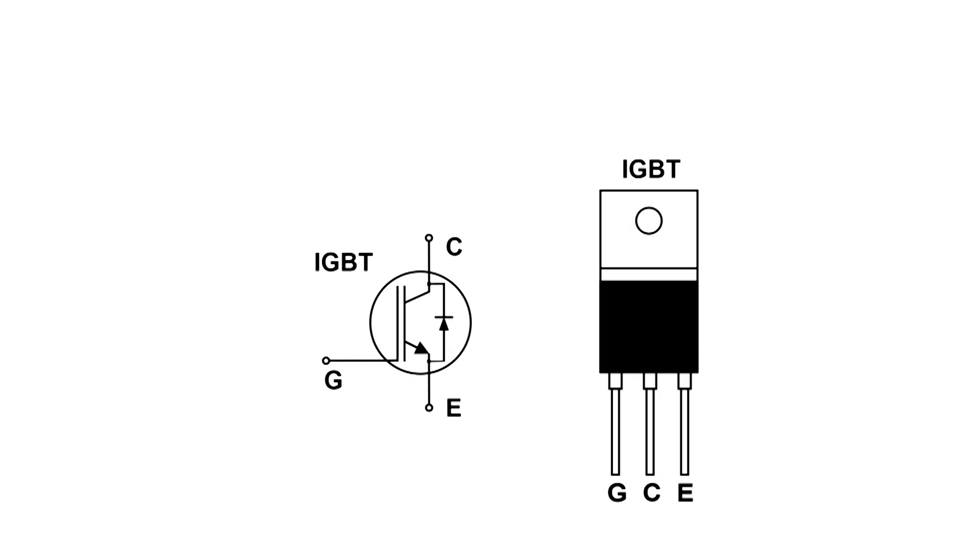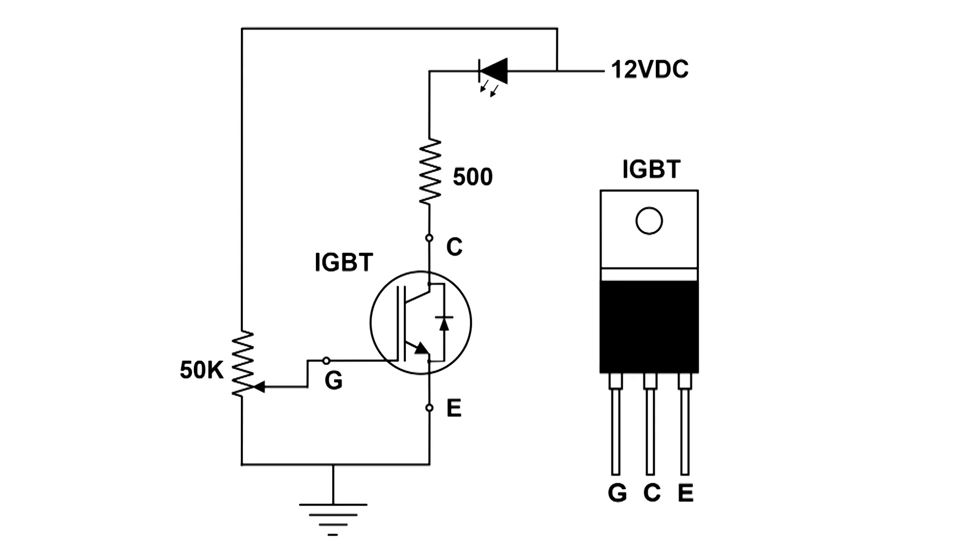I'm going to put this in a very simple circuit. And here it is. On the gate we have a variable resistor so we can vary the voltage from practically zero up to 12 volts. On the collector we've got a 500 ohm resistor, and in series with that is an LED going to 12 volts.